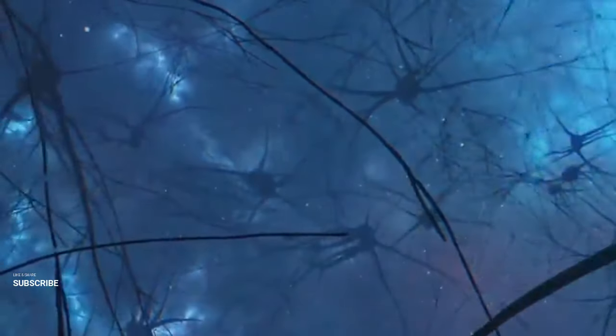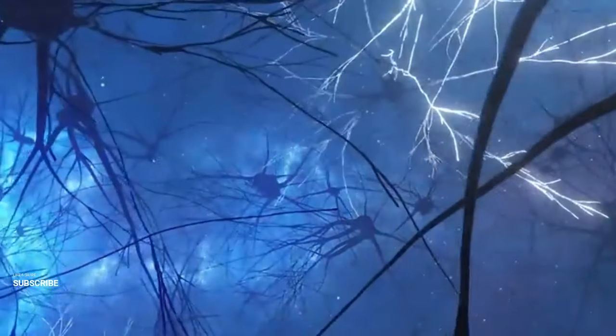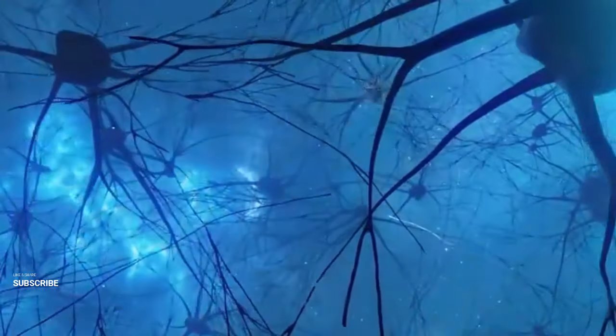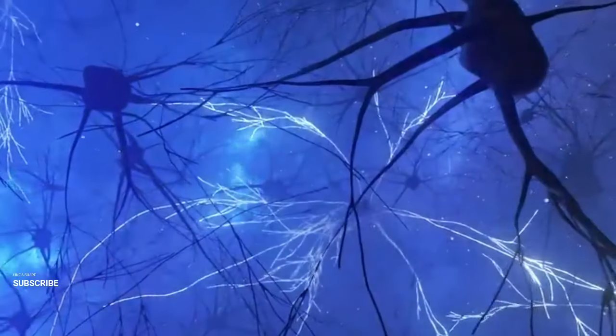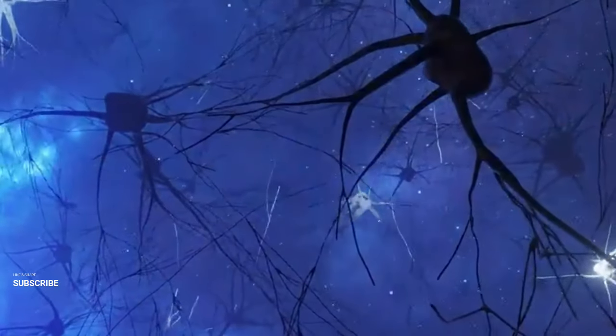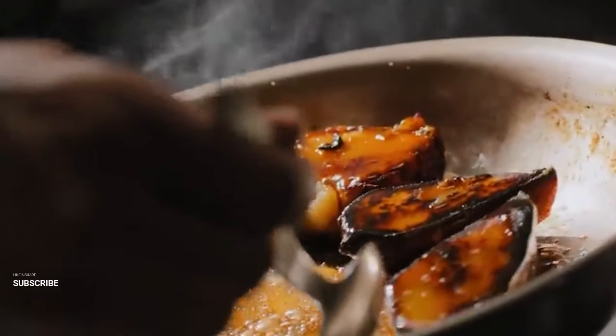The journey of light from the world to the back of our retina is a marvel of biology and physics. While a few fractions of a second might not significantly alter our mirror perception, the implications become staggering when we consider greater distances. Take our lunar neighbor: the moon orbits at an average distance of 384,000 kilometers, making it approximately 1.3 light seconds away. When we admire the moon's brilliance, we're witnessing it as it was 1.3 seconds in the past.